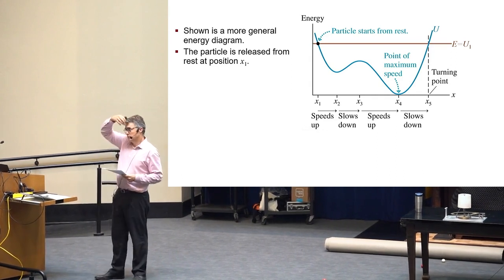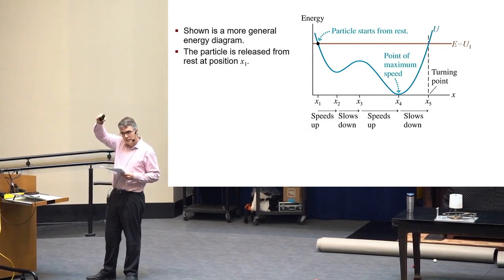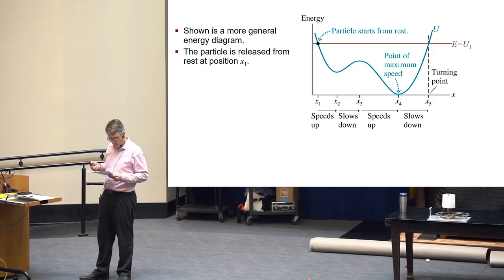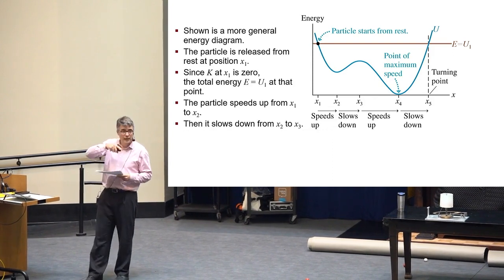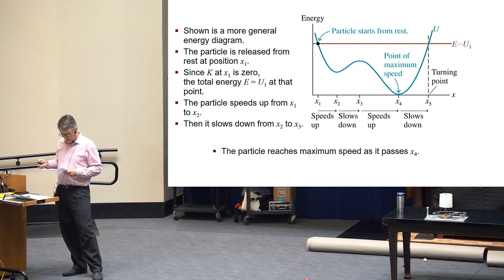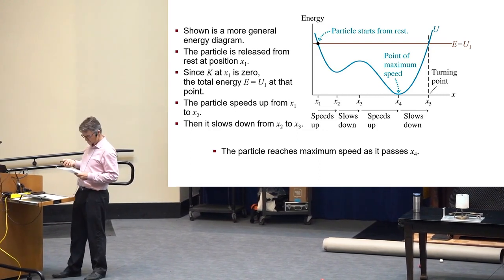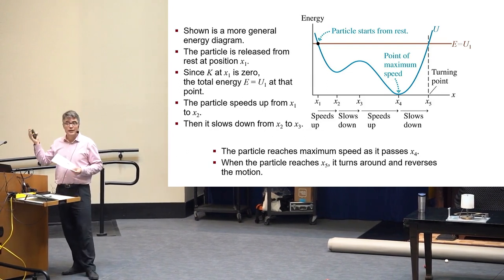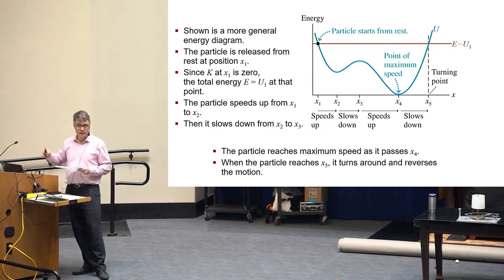So there's other U_s curves. Here's another one, a more general sort of diagram. You have a particle that's released from rest at position X_1. And then the kinetic energy, which is the difference between the total energy and the potential, is zero at that point. So it's released from rest. And then it's going to move to the right. It tends to slide down the curve. Because it's going to pick up kinetic energy as it goes towards the right. It'll speed up from X_1 to X_2. And then it slows down as the potential energy goes up again. And then speeds up again, gets to its maximum speed at X_4. And then when it gets to X_5, the speed goes to zero, and that's called a turning point. It'll turn around at that point and then go backwards. So it'll sort of oscillate back and forth.